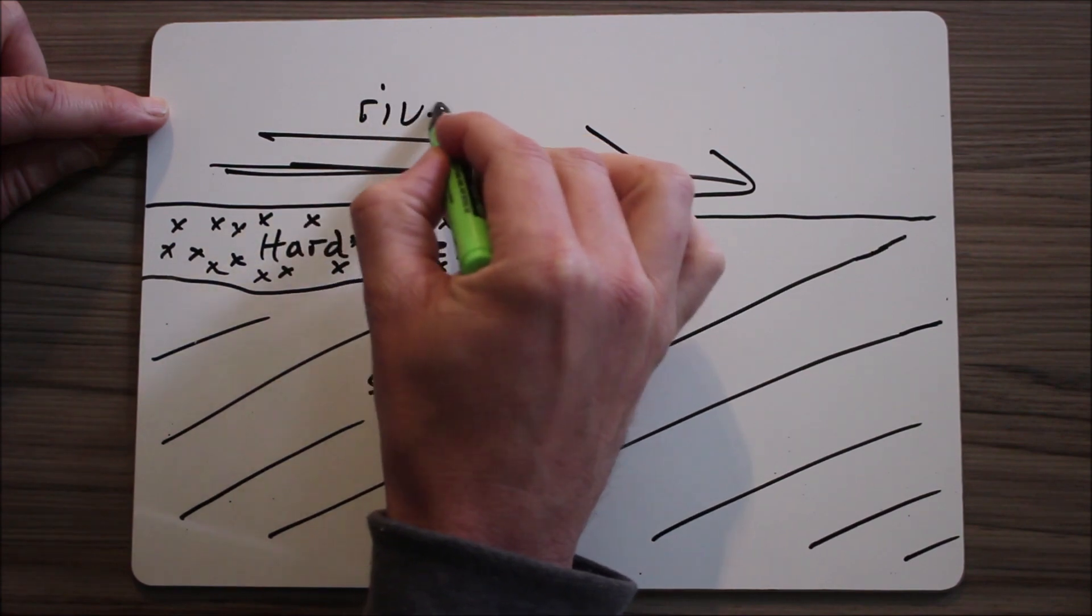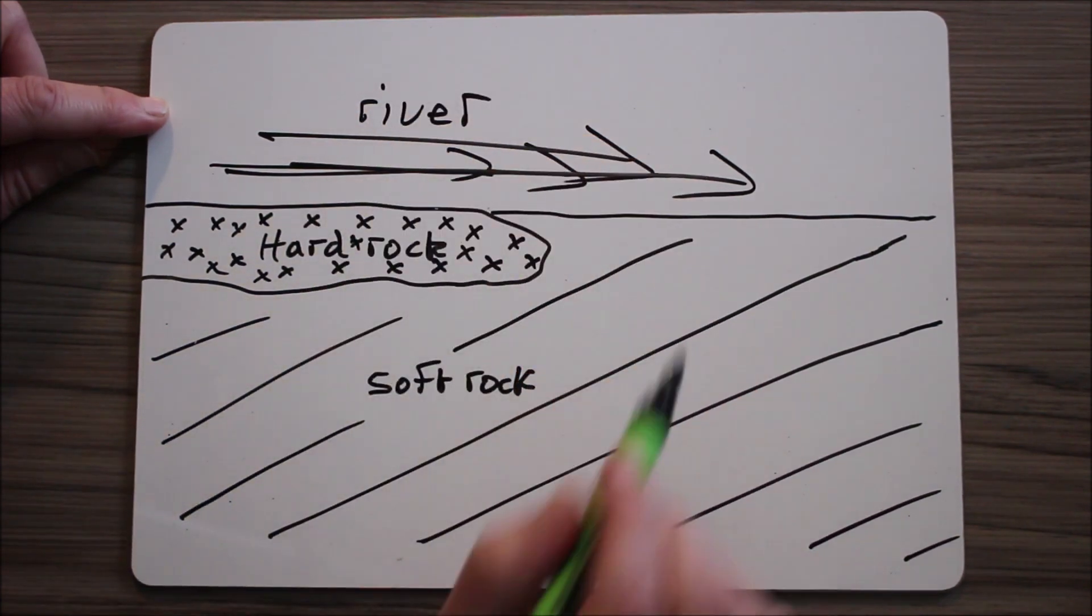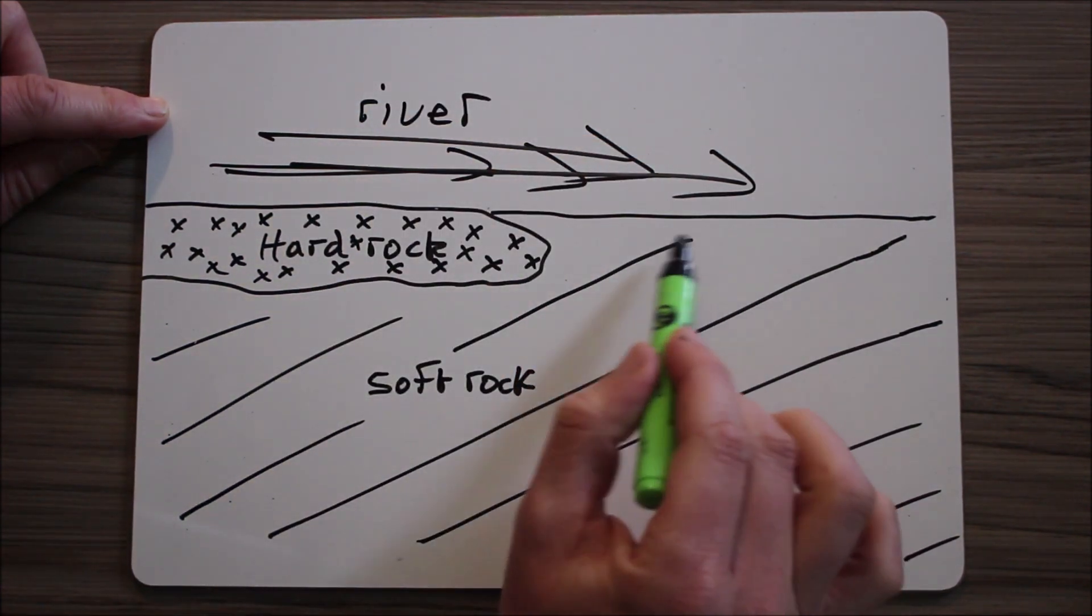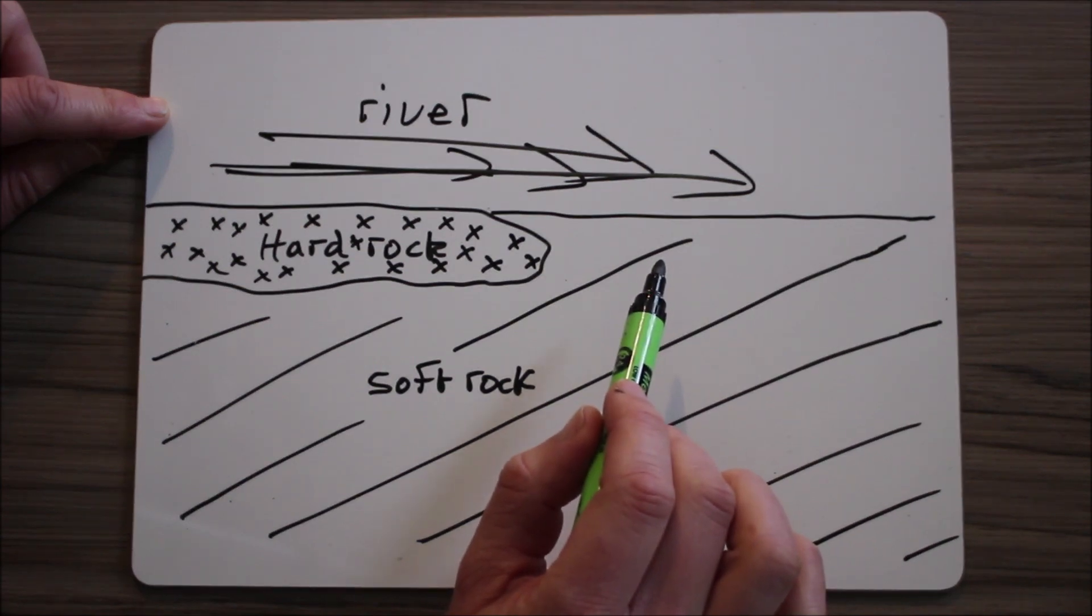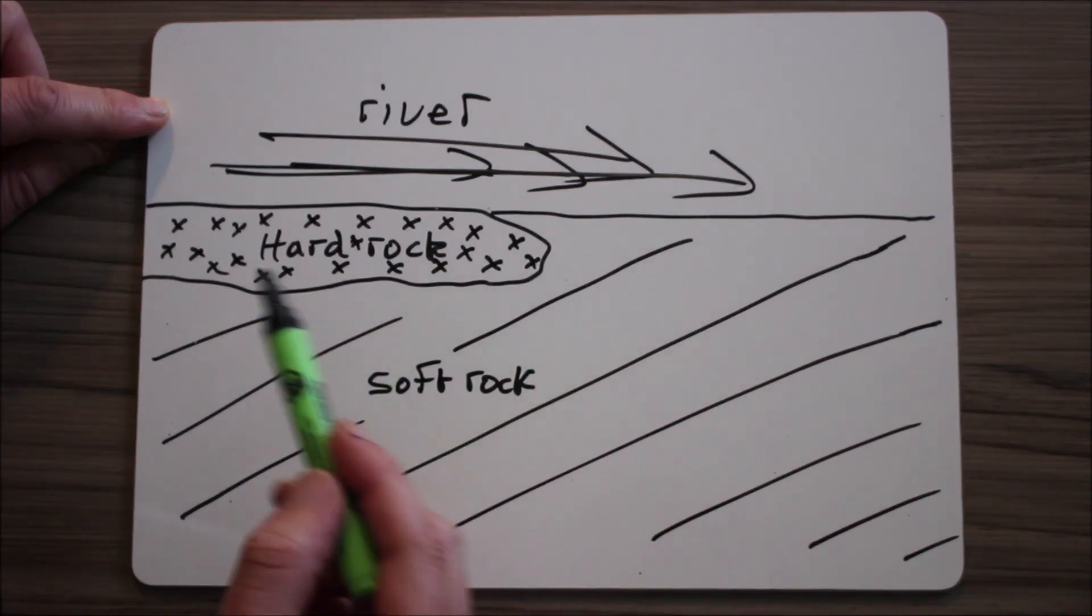The river is flowing over the hard rock, then the soft rock. It will erode the soft rock quicker than it erodes the hard rock, and it'll erode it through the processes of hydraulic action and abrasion.